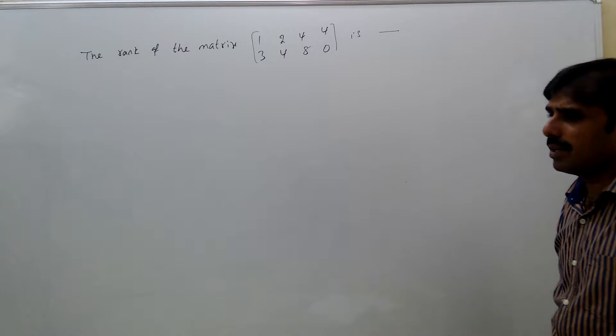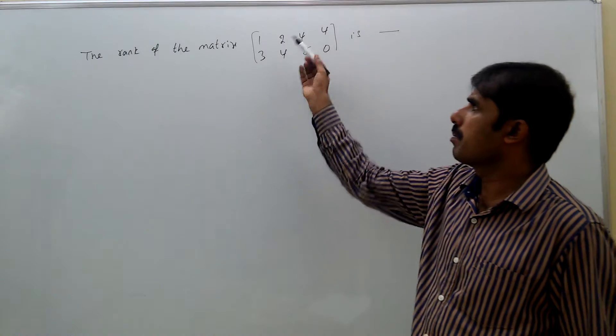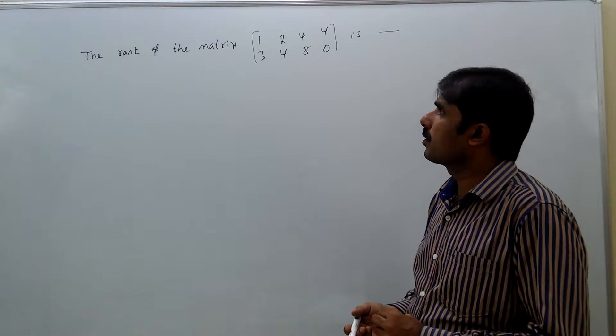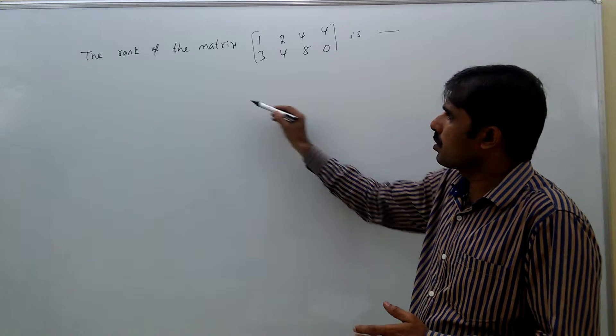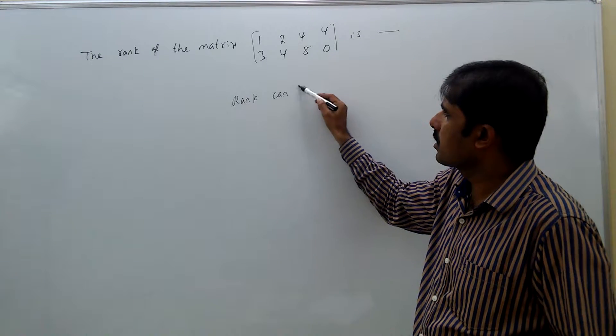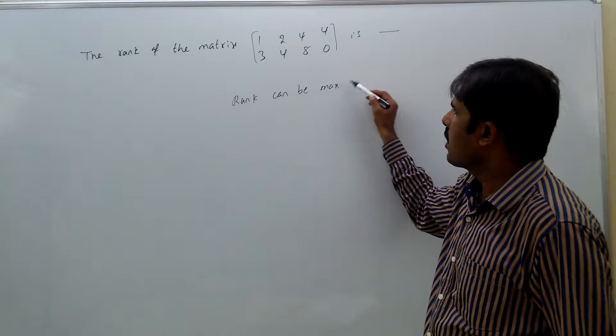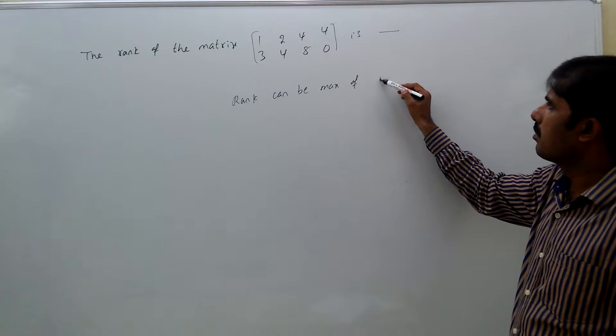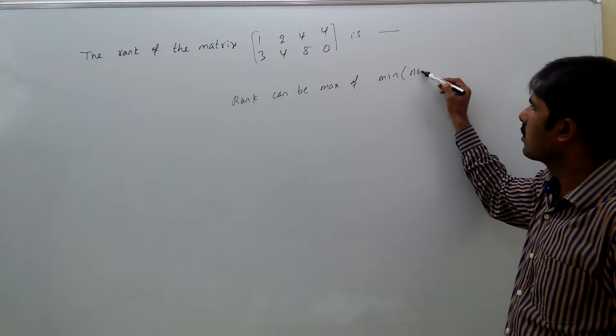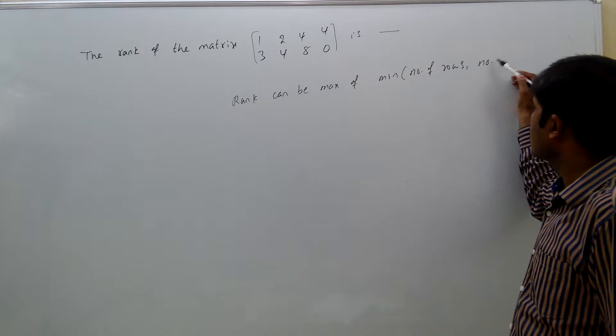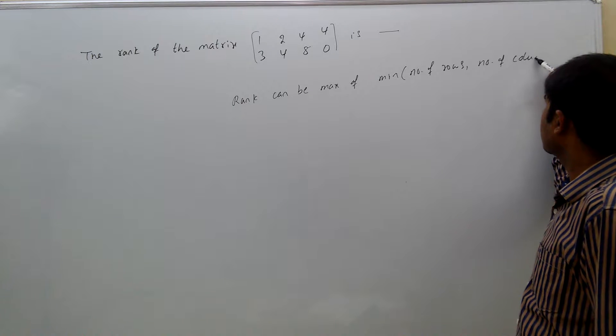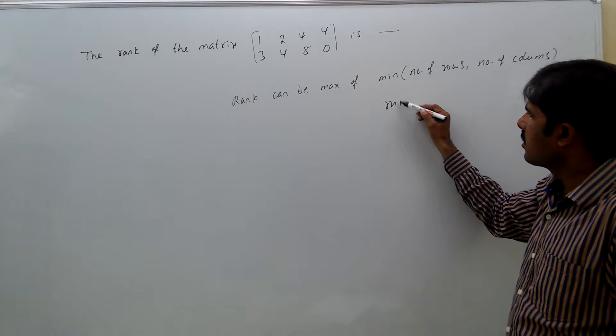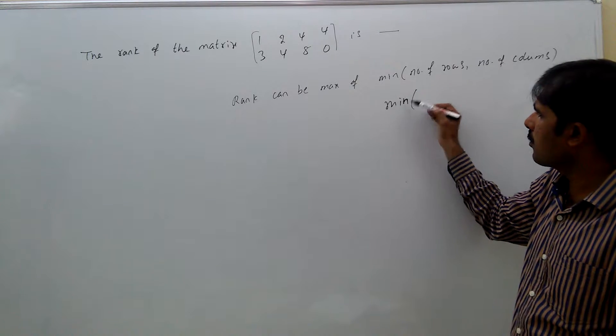The rank of any matrix can be maximum of the minimum of number of rows and number of columns. In this case, what is the number of rows?